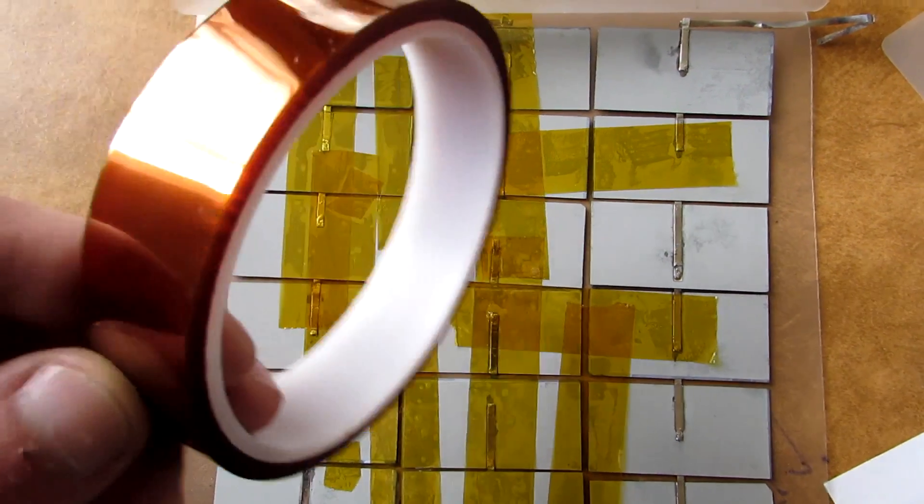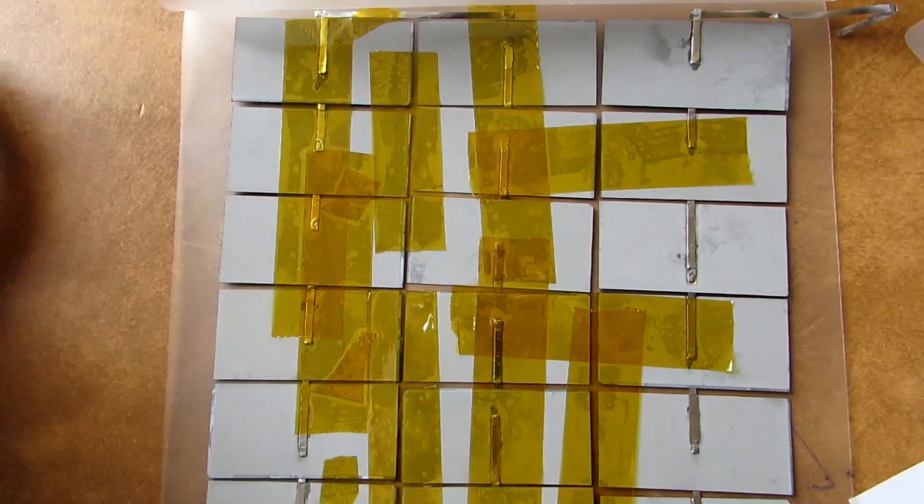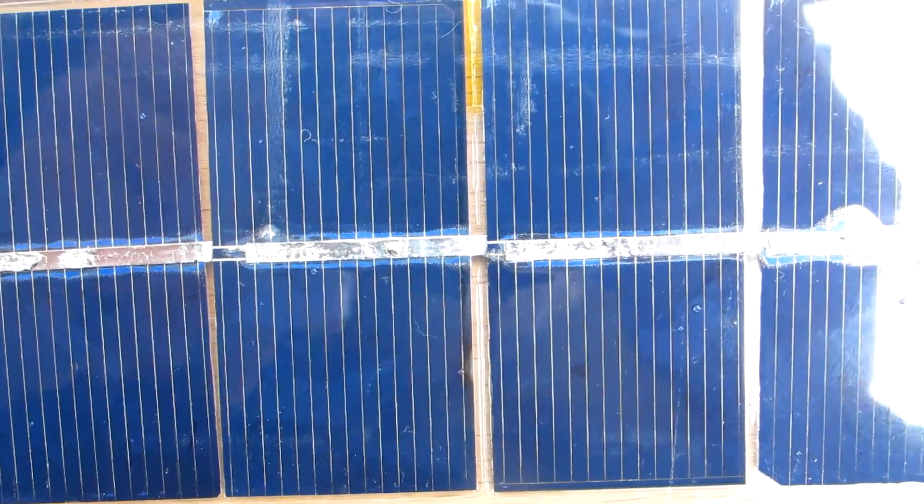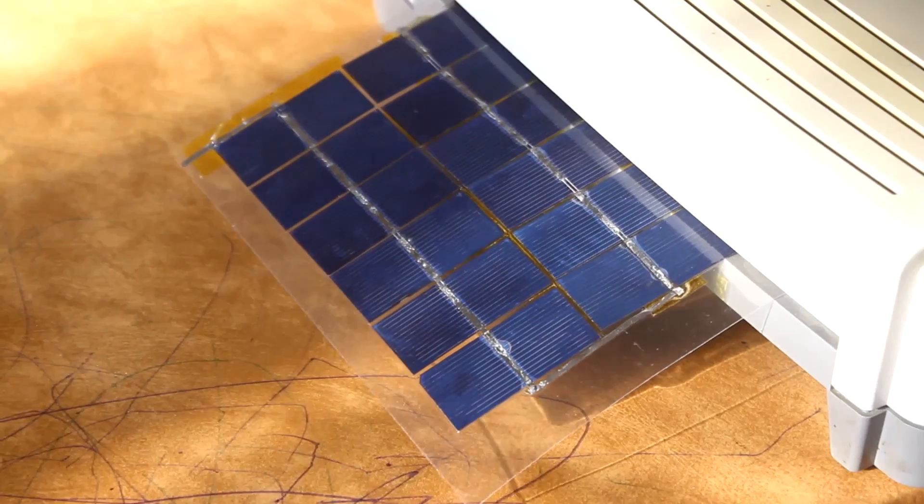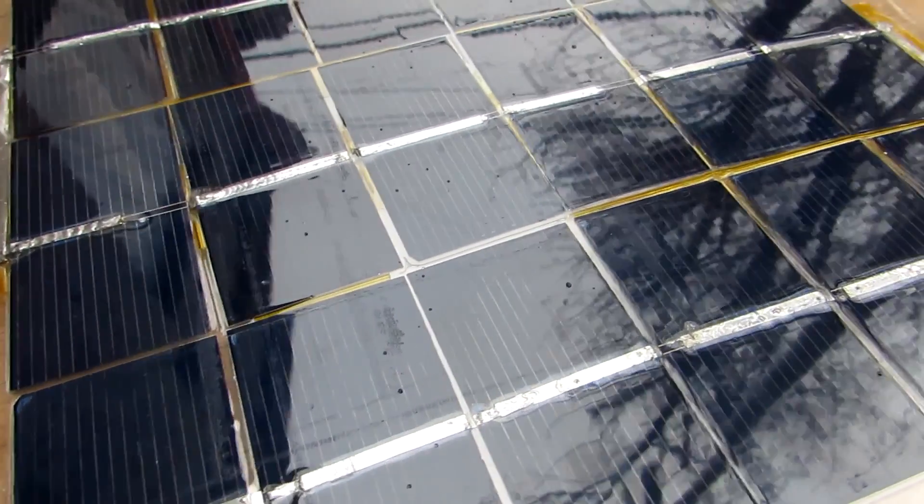I forgot to say, the modules were fixed on the film by heat-resistant adhesive tape. Try to align them to the maximum, although the laminator will definitely move them a little. I repeated the lamination a couple of times and that's what I have finally.